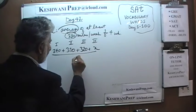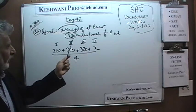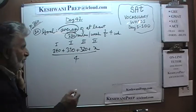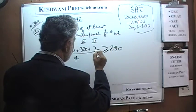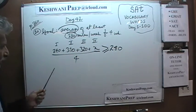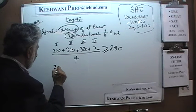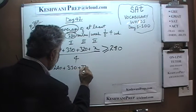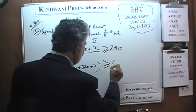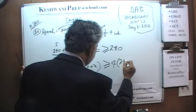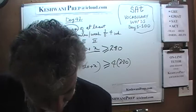If we want the average, we need to divide by 4, and this quantity represents the average. It has to be at least 280 miles, which means this quantity has to be greater than or equal to 280. The next thing done is multiplying both sides by 4, and we end up with 240 plus 310 plus 320 plus x, which has to be greater than or equal to 4 times 280. That's all they've done in this problem, and that is answer choice D.